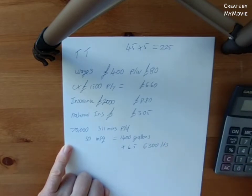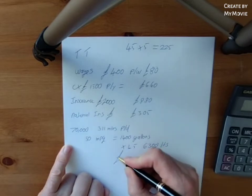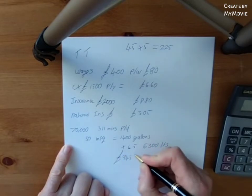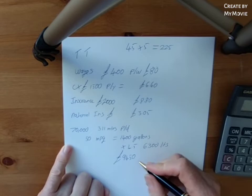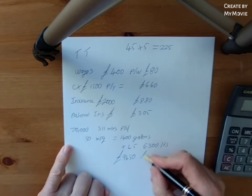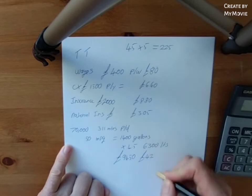And at the moment, we're just going to go with £1.50, horrendous as it is. So that gives you £9,450 per annum for fuel. So we divide that by 225. That gives us £42 of fuel per day.